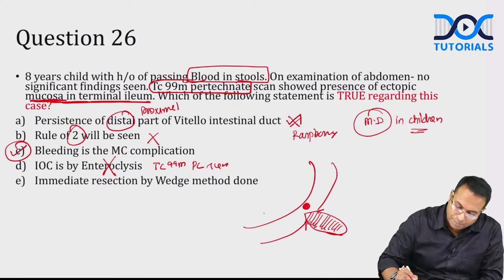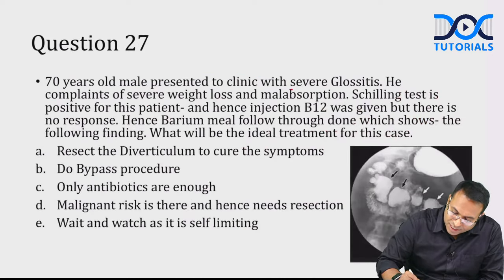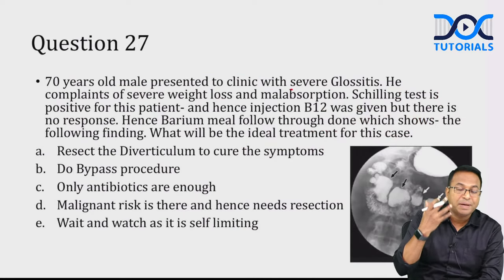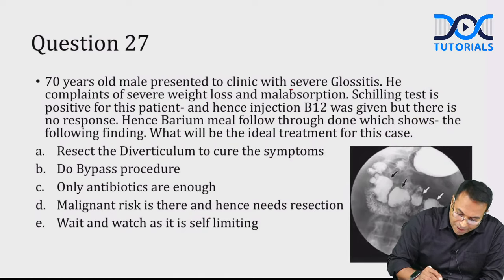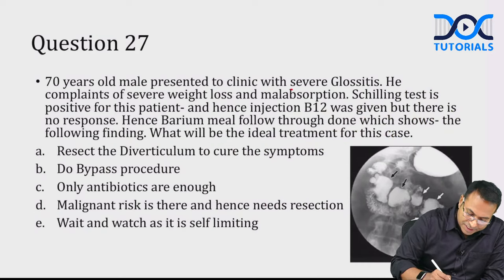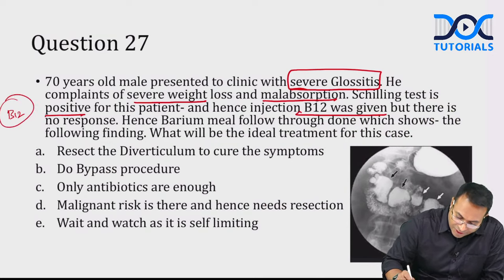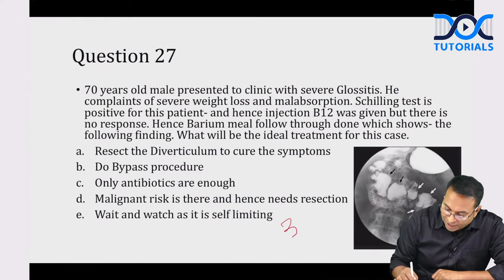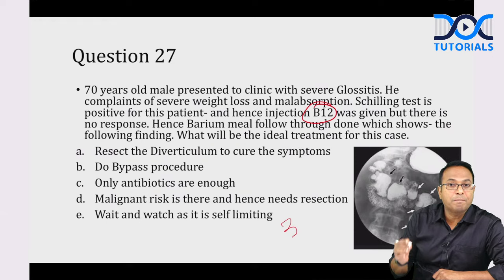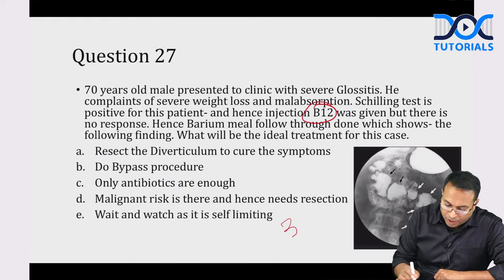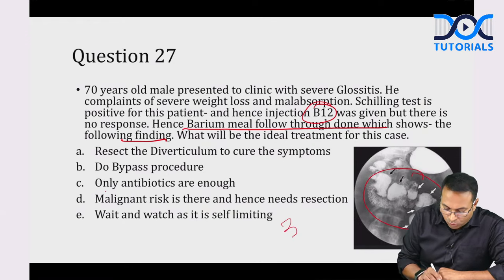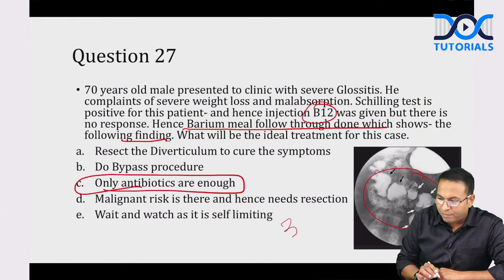70-year-old male with severe glossitis, weight loss, malabsorption, and positive Schilling test has B12 deficiency. Barium meal follow-through shows jejunal diverticulosis. Bacteria in the diverticula consume B12, causing deficiency. Treatment for jejunal diverticulosis is antibiotics; resection is done only for recurrence.